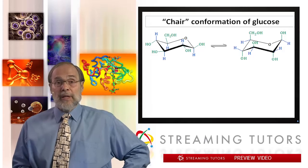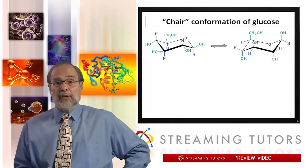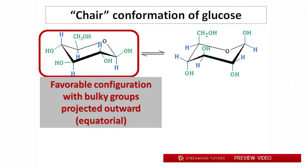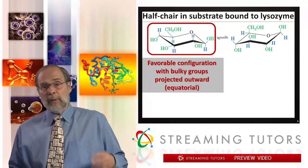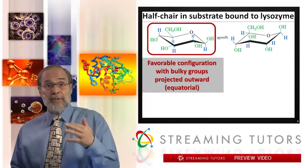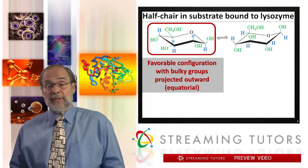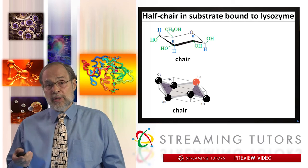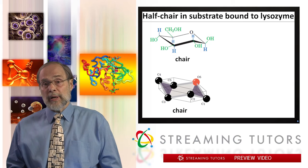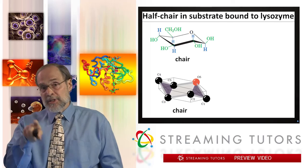Here's some background. Glucose can exist in several different configurations — the so-called chair configurations. The preferred configuration has bulky groups projecting outward away from the ring equatorially. The less preferred conformation has those bulky groups bumping into one another and projecting axially into the center of the monosaccharide ring. The D-ring normally occupies this preferred chair configuration, but it's distorted into what's called a half-chair configuration as a result of binding to the lysozyme enzyme. At the bottom is the chair configuration of the relevant D-ring N-acetylglucosamine, showing just the cyclic carbons and oxygens.